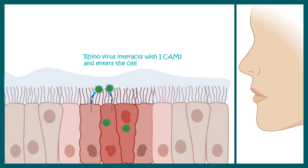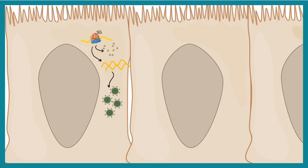By interacting with the ICAM receptor, the rhinovirus can enter the nasal columnar epithelial cells through receptor-mediated endocytosis. Once inside, its genetic material — which is a plus-strand RNA — is detected by the ribosomes and treated as an mRNA. So instantly there is production of viral proteins, and the genome is eventually replicated. These viruses then assemble and are ready to infect another cell.